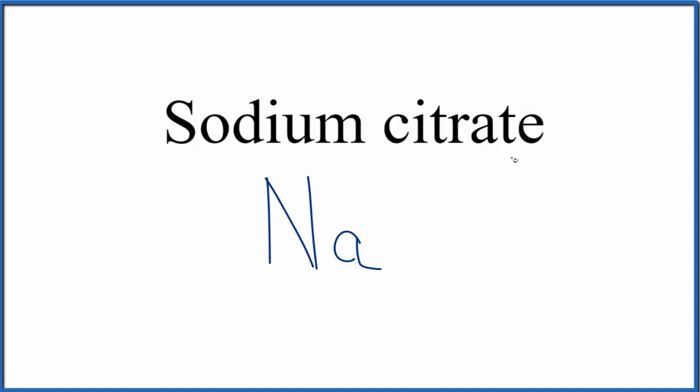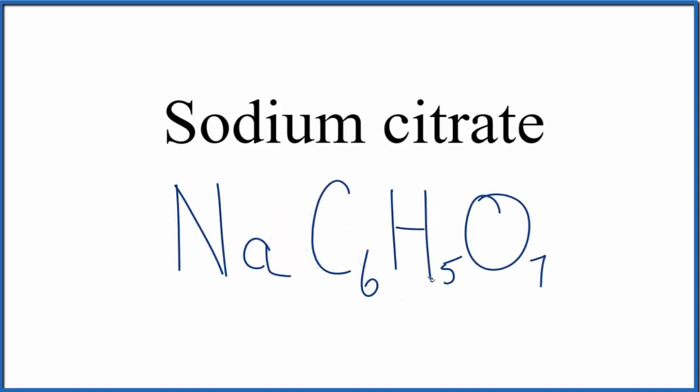So we either memorize the formula for the citrate ion here, or we look it up. I've not memorized the formula for the citrate ion, so I look it up. I get C6H5O7. And the whole thing, the whole citrate ion here, has an ionic charge of 3-.